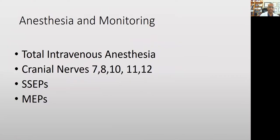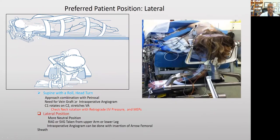Patients are generally under anesthesia with totally intravenous anesthesia. Cranial nerves are being monitored, along with SSEPs and MEPs. They're generally placed in the lateral position, although you can also do the operations with the patient in the supine position. When you put them in the supine position, the neck and C1 rotate on C2, which stretches the artery considerably.